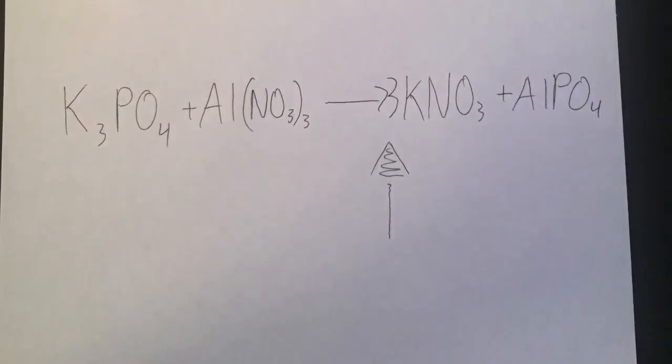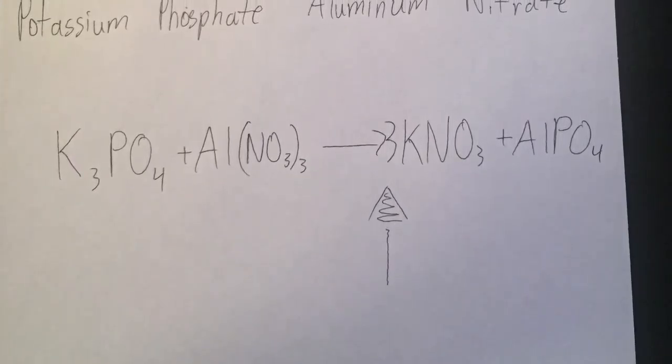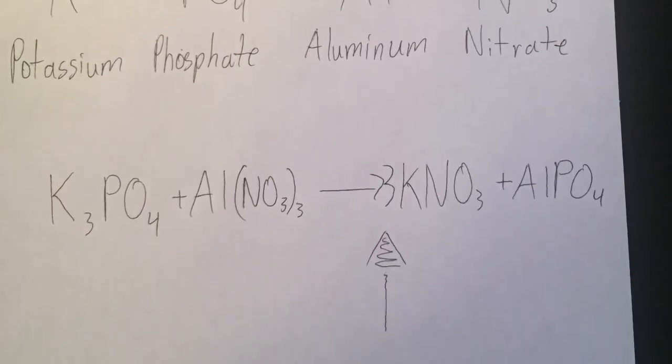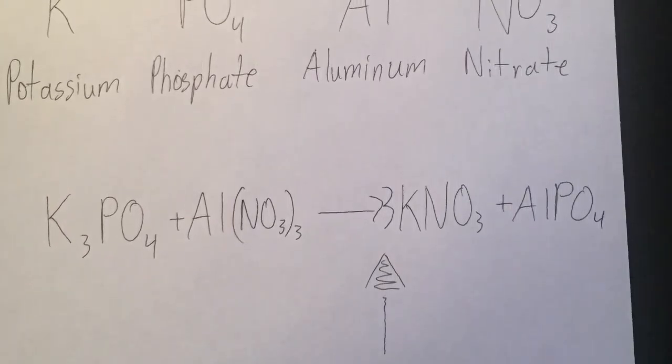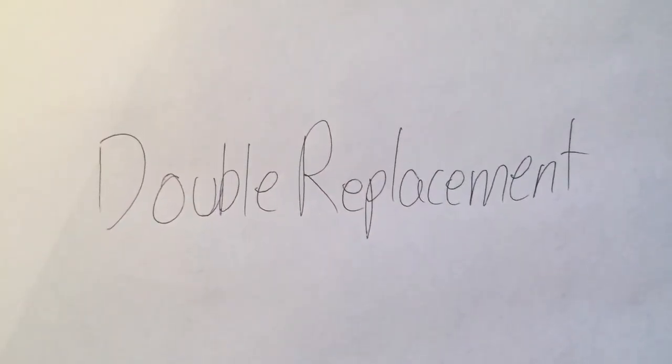Now in order to balance out this chemical equation, both sides need three potassiums and three nitrates. In order to fulfill this, all you have to do is put a three in front of potassium nitrate. This is a double replacement reaction. Thank you.